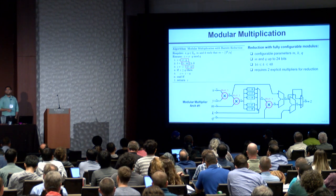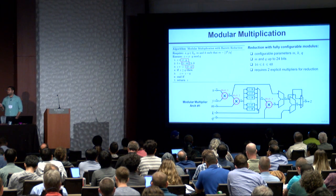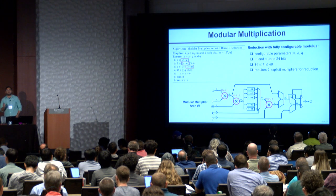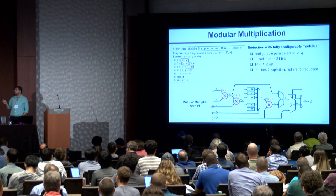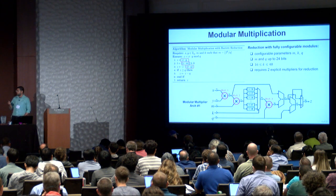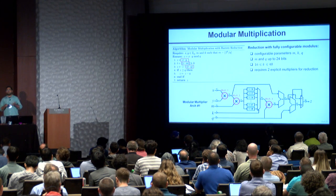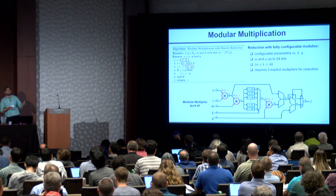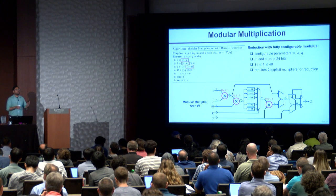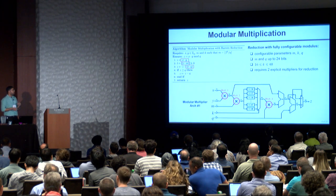First, we take a look at modular multiplication. In our implementation, we support a fully configurable 24-bit prime modulus, and we use a 24-bit multiplier followed by standard Barrett reduction. The algorithm for Barrett reduction is shown here. To explore the different trade-offs between efficiency and flexibility in the modular reduction process, we implemented two different architectures of the modular multiplier.